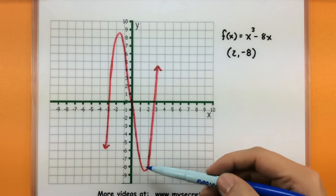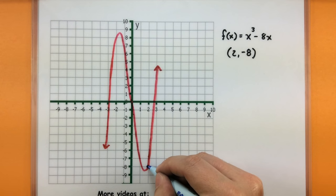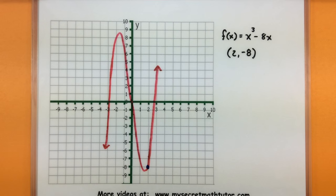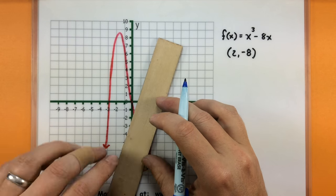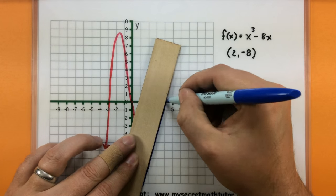So here I have the function, and we're really curious about how this function is changing right at this point here. Well, what that really means is I'm curious what is the slope of a tangent line through that individual point.